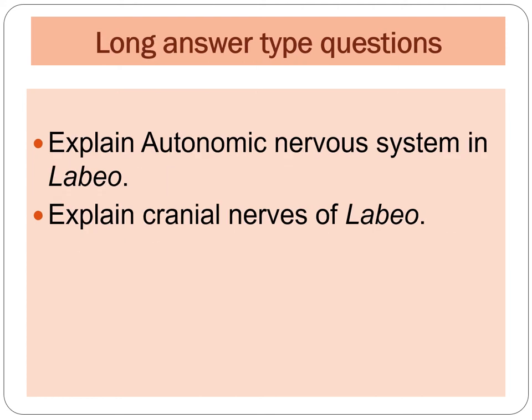The third category of questions are long answer questions, which are explanatory type, and you have to support your answer with diagrams, flowcharts, or tables. The first question of this category is: explain the autonomic nervous system in Labeo. The second question is: explain the cranial nerves of Labeo.